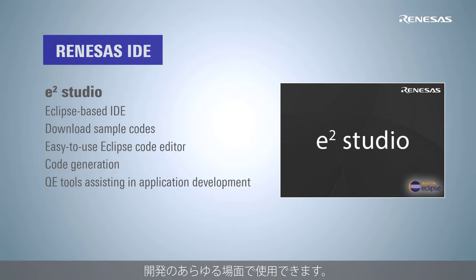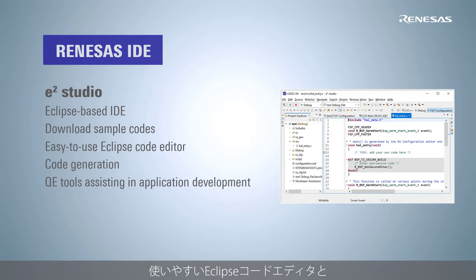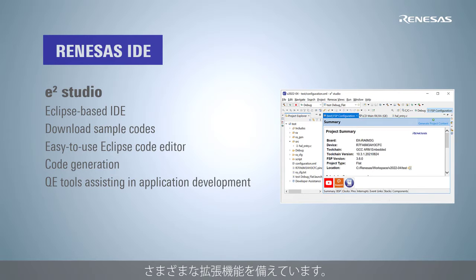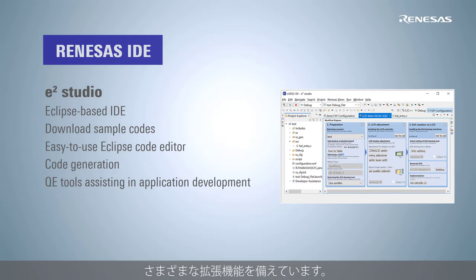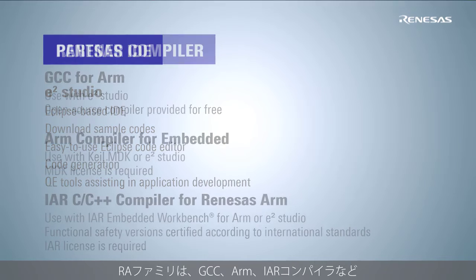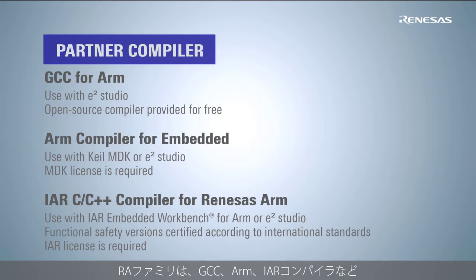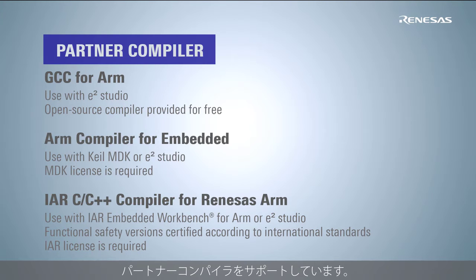In addition to an easy-to-use Eclipse code editor, e² Studio has various extended functions for more efficient development, such as a code generation assistance tool and QE tools for assisting in application development. The RA family also supports partner compilers such as GCC, ARM, and IAR compilers.